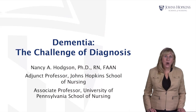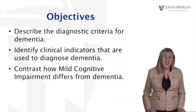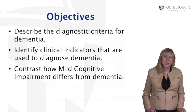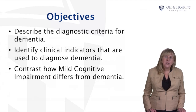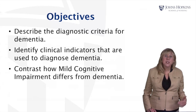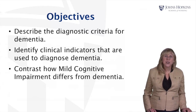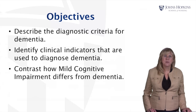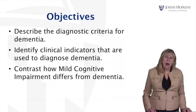Hello and welcome to the lecture on Dementia, the Challenge of Diagnosis. The objectives for this lecture are: first, to describe the diagnostic criteria for dementia; second, to consider different clinical indicators used to diagnose the different types of dementia and what clinical indicators are necessary for a diagnosis; and third, to contrast how mild cognitive impairment differs from dementia.